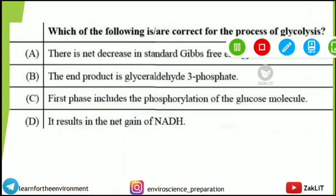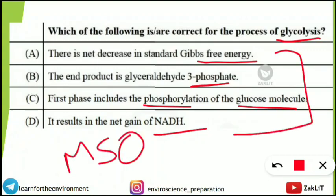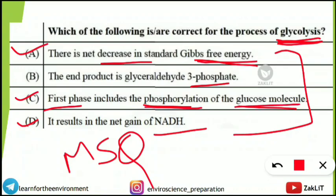The next question is an MSQ on glycolysis: which of the following are correct for the process of glycolysis? Options are: (A) net decrease in standard Gibbs free energy, (B) end product is glyceraldehyde-3-phosphate, (C) first phase includes phosphorylation of the glucose molecule, (D) results in net gain of NADH. The correct options are A, C, and D. There is a net decrease in Gibbs free energy. The first phase involves phosphorylation of glucose. It results in a net gain of NADH. The end product of glycolysis is not glyceraldehyde-3-phosphate — that statement is incorrect.